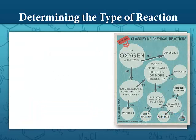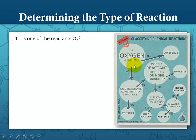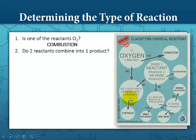Here's a flowchart to help you determine the type of reaction. We start where it says 'start here.' We ask: is oxygen a reactant? If oxygen is a reactant, then it's a combustion reaction. If not, we go to the next step: do two reactants combine into one product? If yes, we have a synthesis reaction.